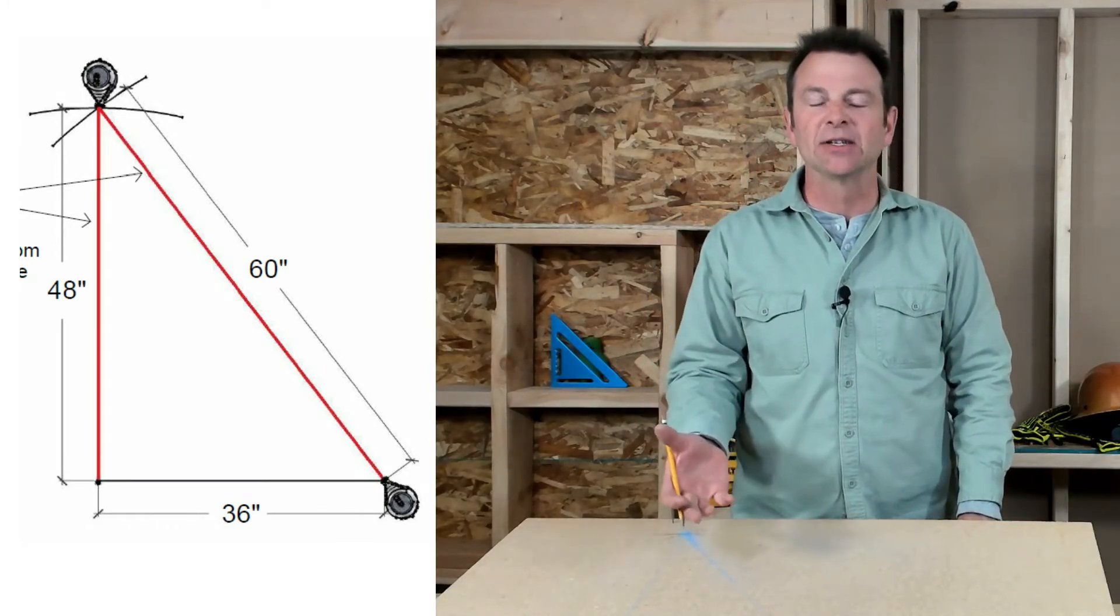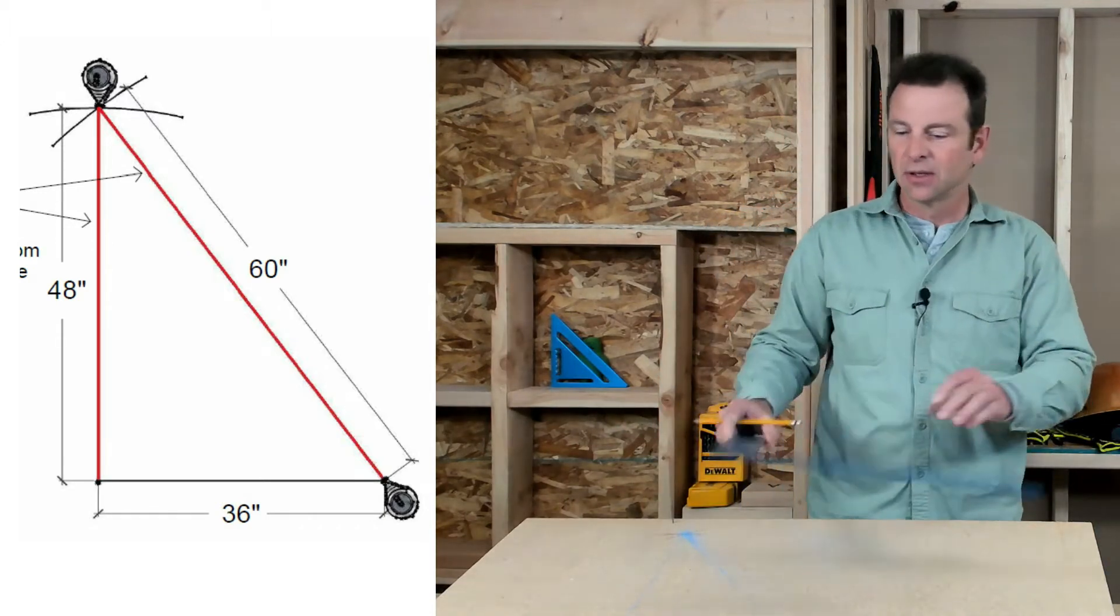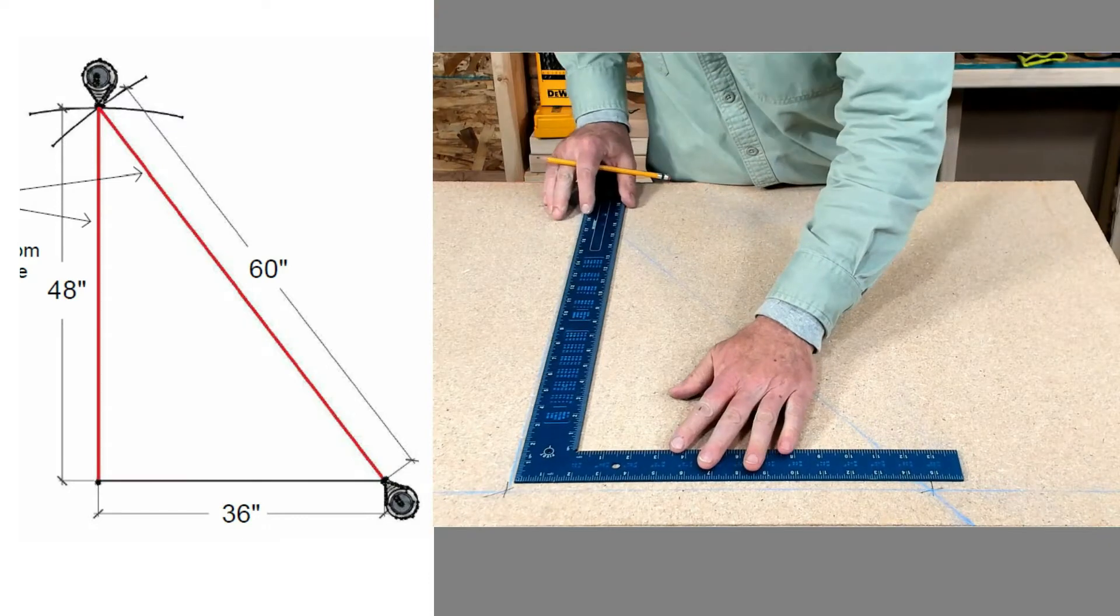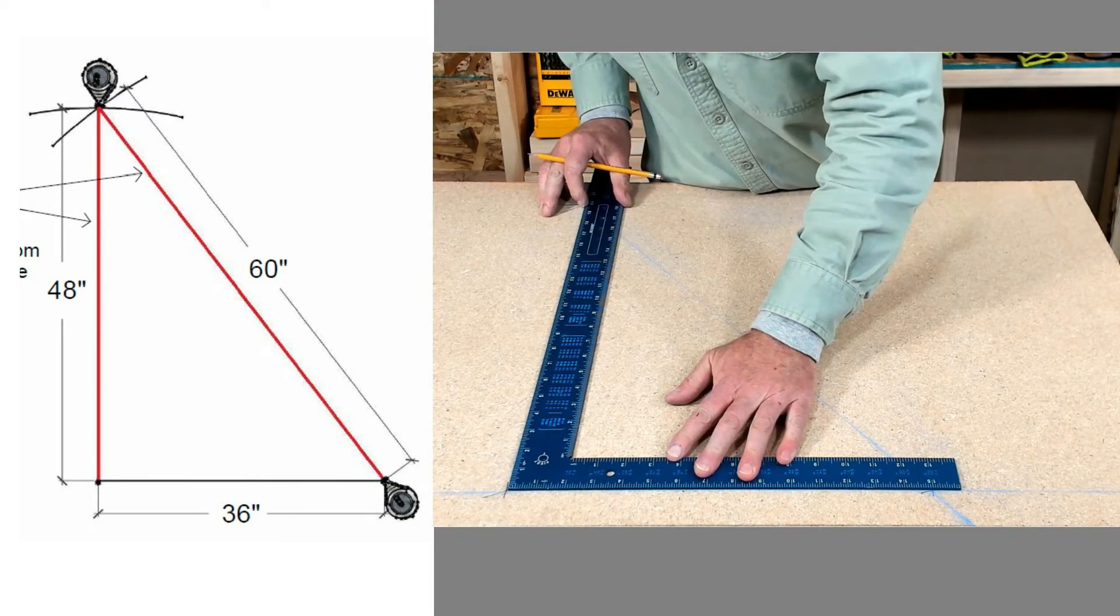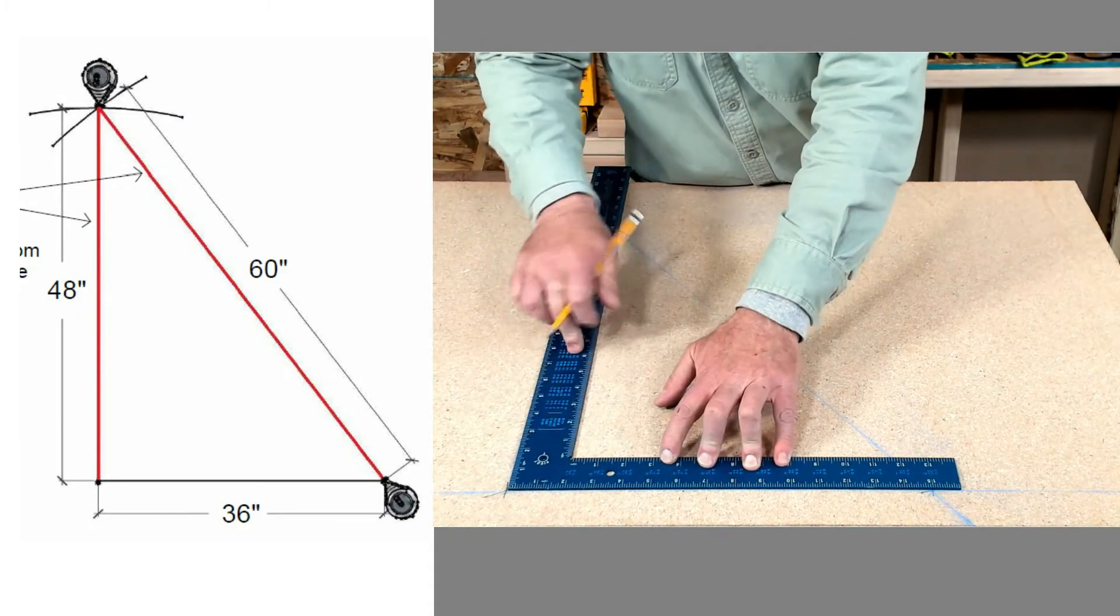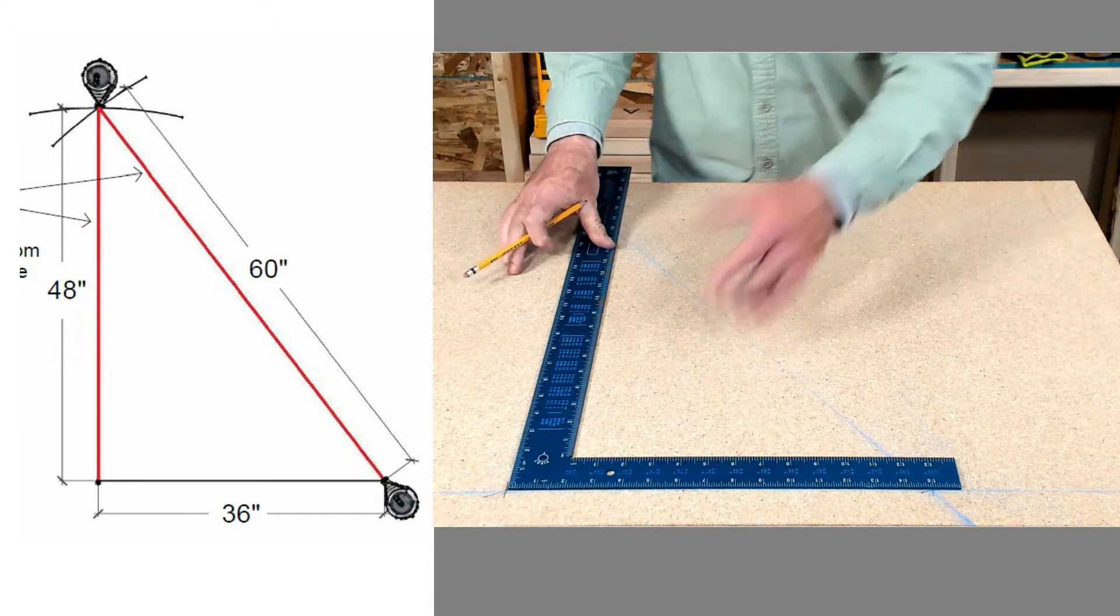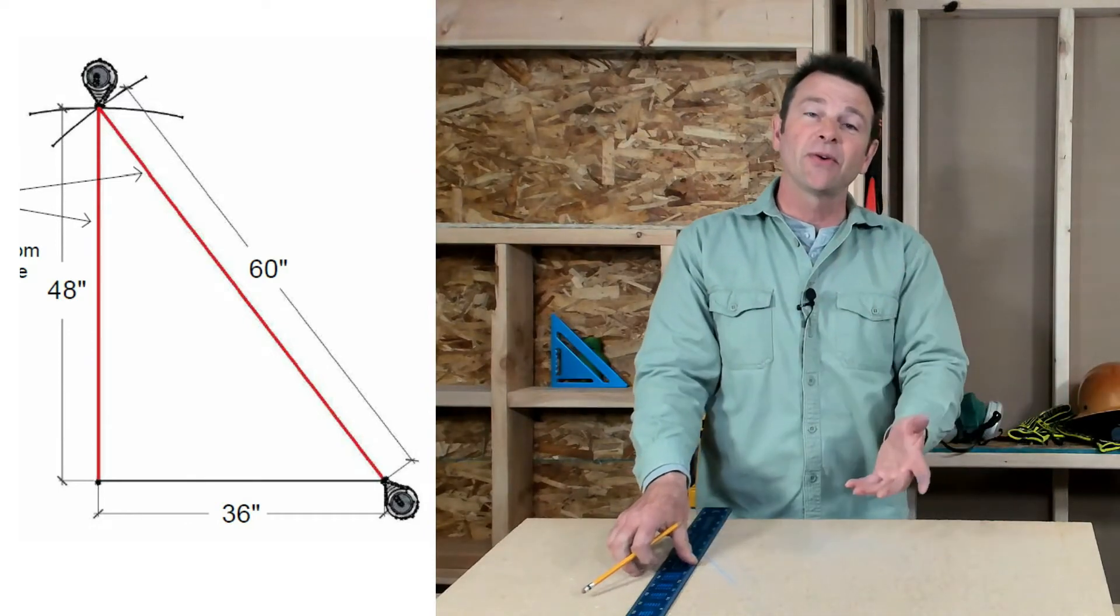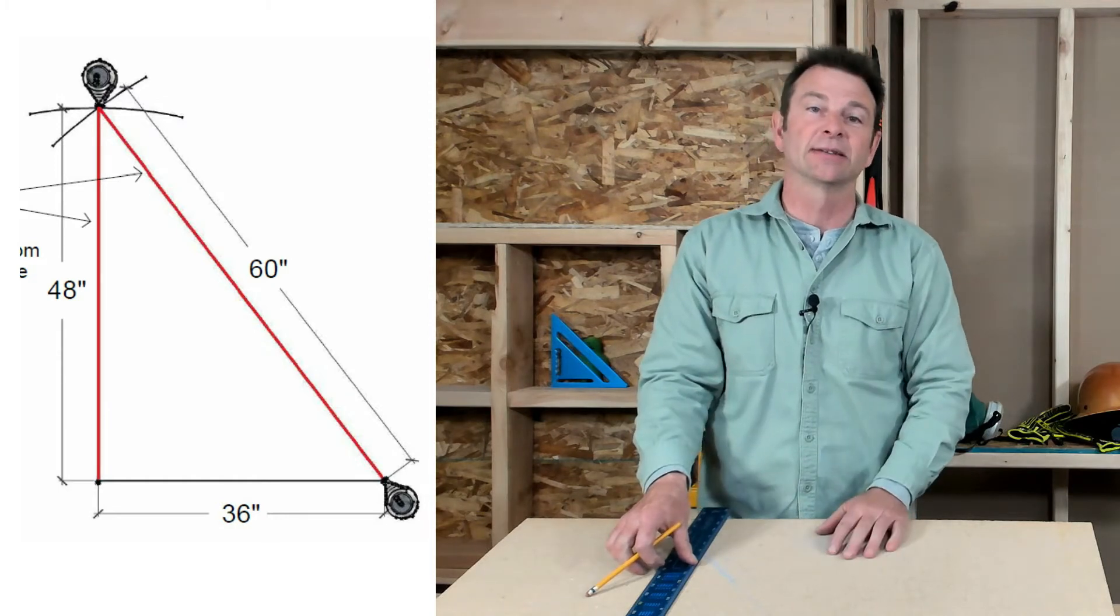Let's verify that we have a 90 degree angle in our 3-4-5 triangle. I'm going to use a framing square and we're going to lay this in here right up on those lines. And we know that this is a right angle and my lines are in perfect alignment with those two sides. So now we know that our 3-4-5, if we do it correctly, we do it accurately, we end up with a 90 degree angle between those two legs.